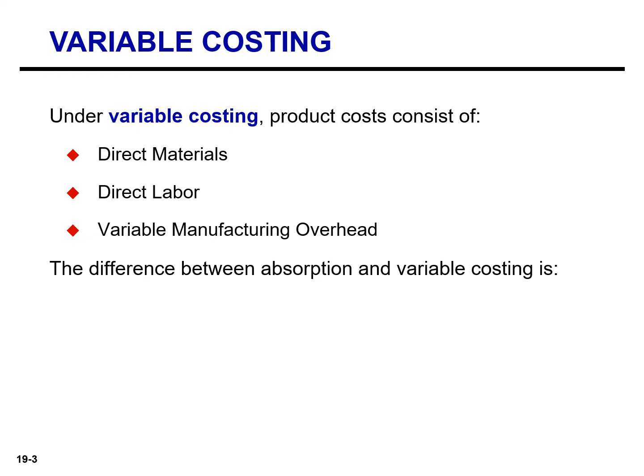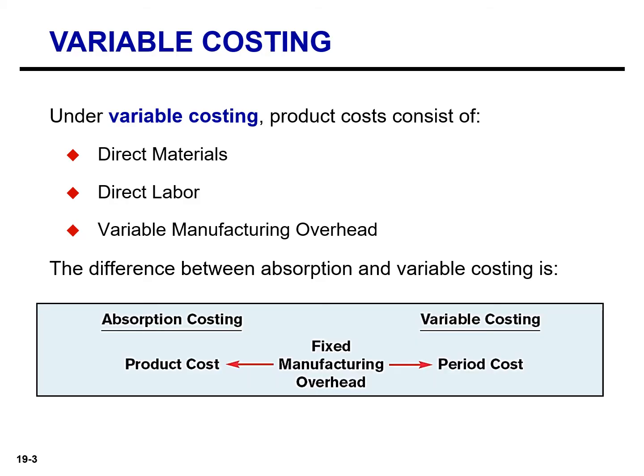Companies recognize fixed manufacturing overhead costs as a period cost and expense it when incurred. The difference between absorption and variable costing is the treatment of fixed manufacturing overhead. Under absorption costing, we include it as part of the product, whereas under variable costing, we treat it as a period cost and expense it when incurred.